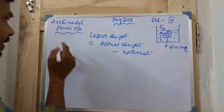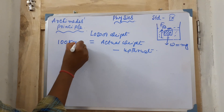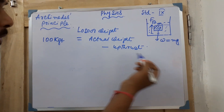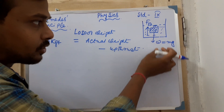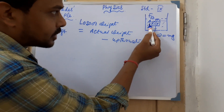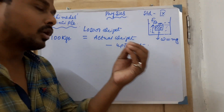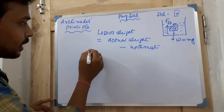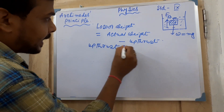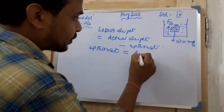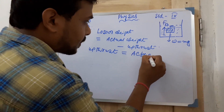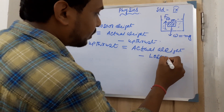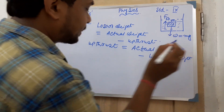For example, if the body's actual weight is 100 kgf, its weight will reduce because weight acts downward but an upward directional force also acts on the body, so a loss of weight occurs. From this, if you want to calculate the upthrust, you write: upthrust = actual weight minus loss of weight.